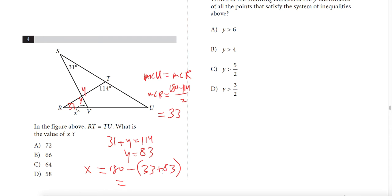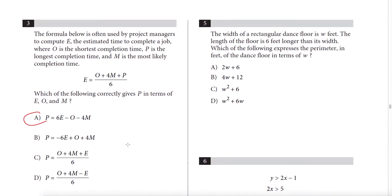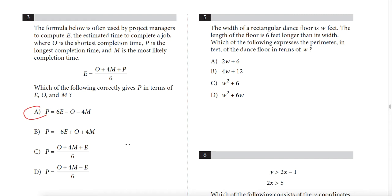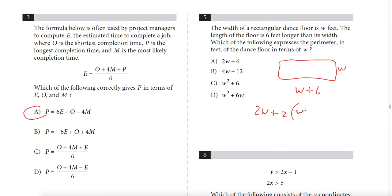Question 5: the width of a rectangular dance floor is W feet, and the length is 6 feet longer, so length = W + 6. The perimeter is 2W + 2(W + 6), which simplifies and gives us 4W. Only answer choice B contains 4W, so that's our answer.